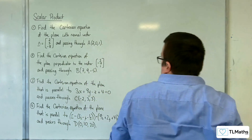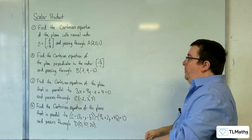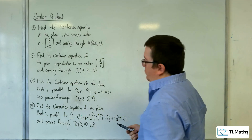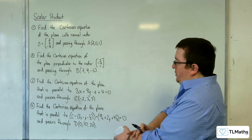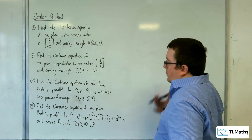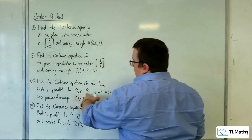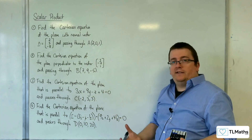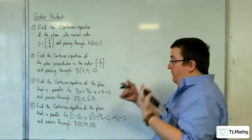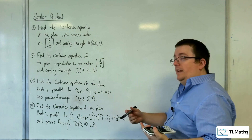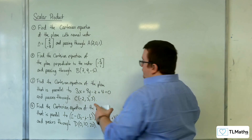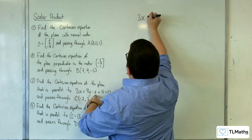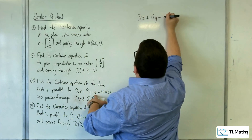Number 3: find the Cartesian equation of the plane that is parallel to 3x plus 9y minus z plus 4 equals 0 and passes through C with coordinates (-2, 3, 3). If it is parallel to this plane, then the normal vector of that plane will also be the normal vector of our plane. So (3, 9, -1) is the normal vector for our plane.